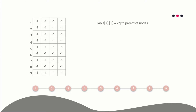To solve this problem, we use a 2D sparse array where table[i][j] represents the 2^j-th parent of node i. For each node, instead of storing every single parent, we store only those ancestors at distances that are powers of 2. For node 9, for example, we store the parent at distance 2^0, 2^1, 2^2, and 2^3. The number of columns needed is log(N), since the maximum distance in a tree with N nodes is at most 2^(log N).